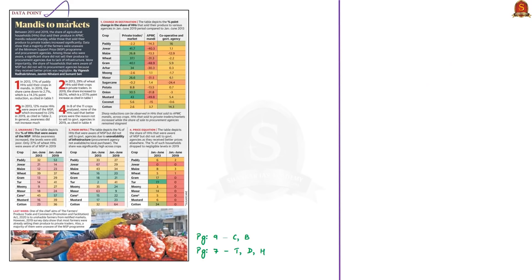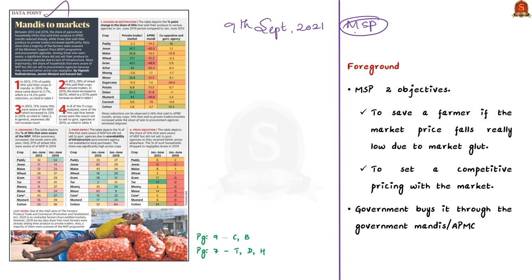Now let us look at this data point. Earlier we saw about MSP — the minimum price through which the government is willing to purchase agricultural produce from a farmer. MSP has two objectives: first, to save farmers from market price volatility if market price falls really low due to market glut; and second, to allow the farmer to set a competitive price with the market. But this data point says many farmers are still selling their produce in the market only. The government buys produce through government mandis, and here is where you should know about APMC.